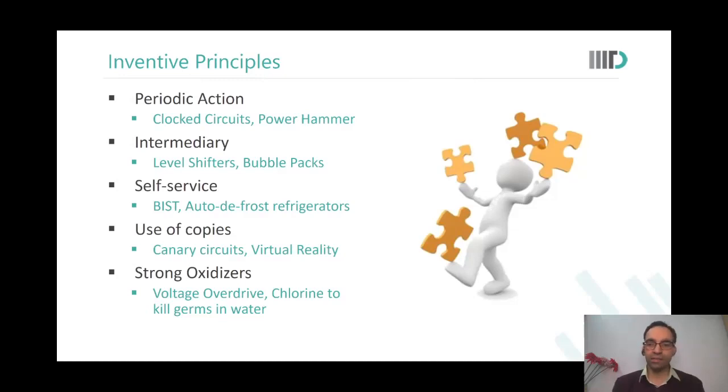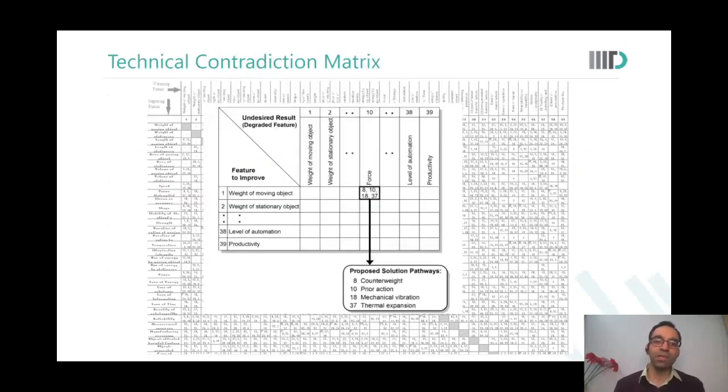Self-service—auto defrost feature in our refrigerators. Whenever there is frost happening inside the refrigeration unit, auto defrost function kicks in. Use of copies—virtual reality. Strong oxidizers—we use chlorine to kill germs in water, potassium permanganate, all that. So we have been using these inventive principles everywhere. Just that until I came back to you, or until for the first time, for example Altshuler said that okay, this is the principle and it is used across so many different domains, we did not realize that these inventive principles could actually be used in this form of a lookup table or contradiction matrix to solve problems.